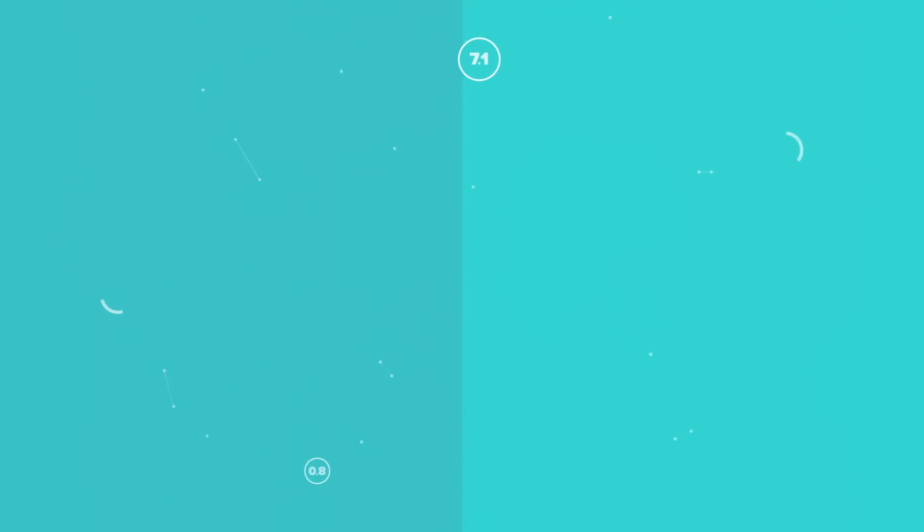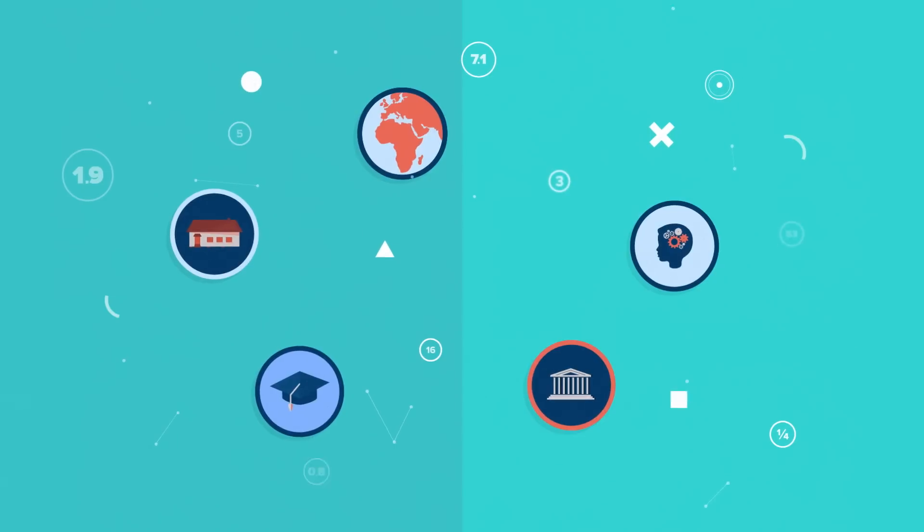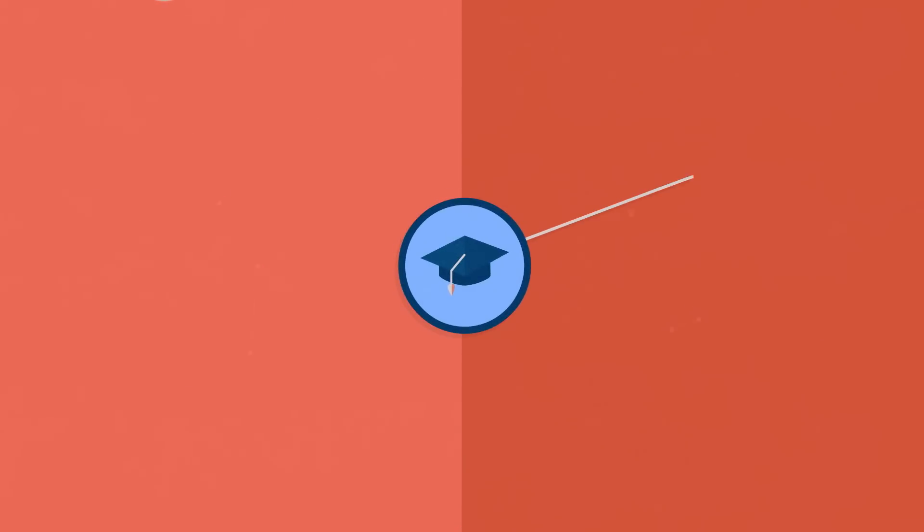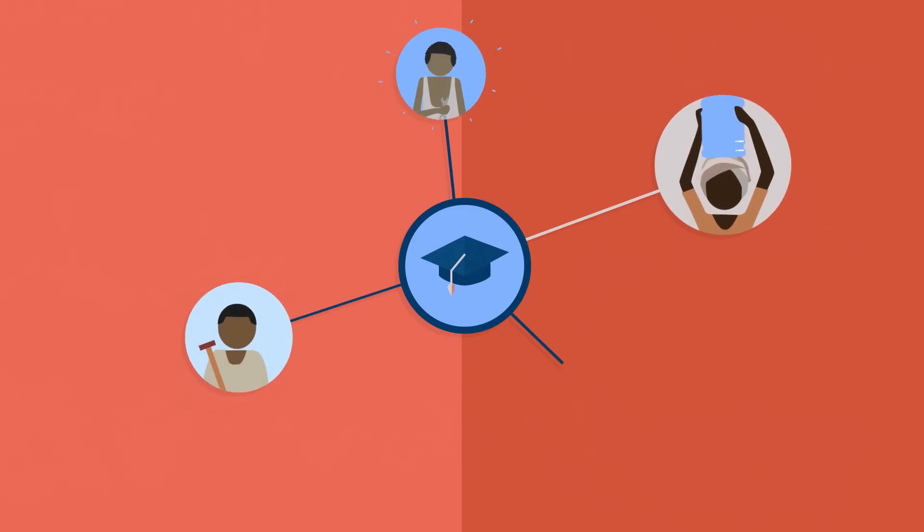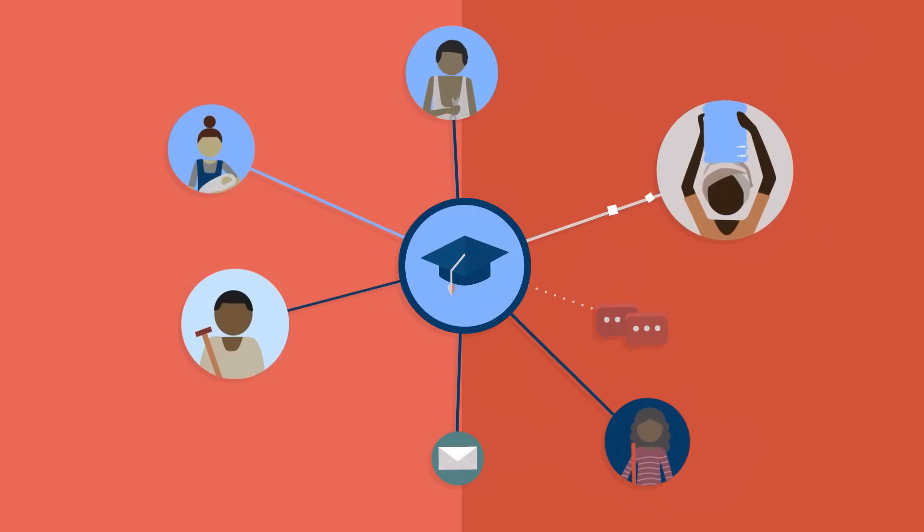Data also point out areas that need more attention. For example, millions of children are still not in school. What's holding them back? We work with partners in countries with high exclusion rates to collect a wide range of data and information.